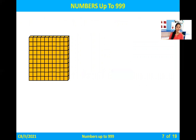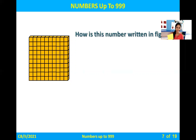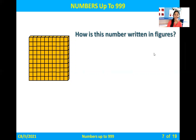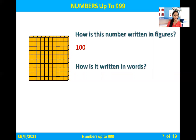Now what is this? How many blocks can you see? You can see one block — is it a tens block, ones block, or hundreds block? It is hundreds block. So this is hundreds block, and how much is this here? This is one hundred. And how do we write one hundred? One zero zero. In figures, we write it as 100.